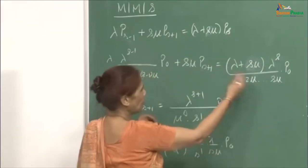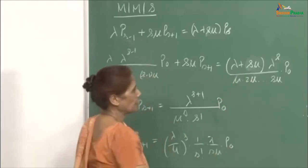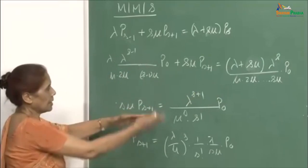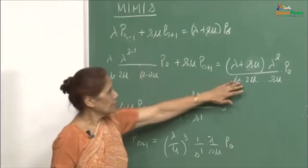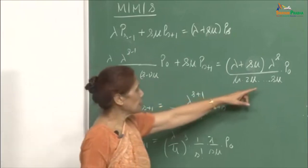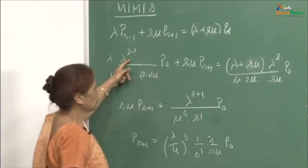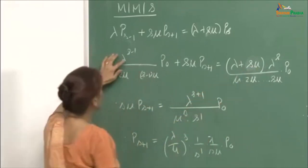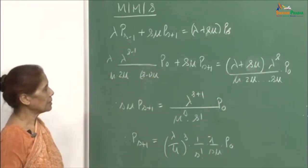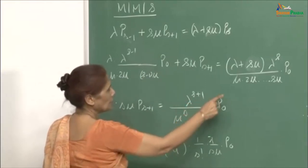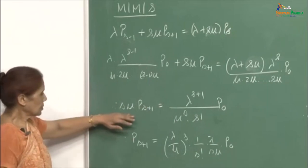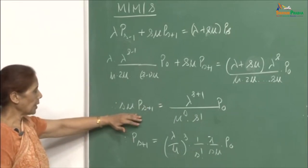Up to p_S the same solution and same formula apply: μ·2μ···S·μ. As we simplify, take this to the other side, and you can do this calculation yourself. You subtract this expression — you have S-1·μ here, so you get S·μ in the denominator when you multiply by S·μ. The λ·S·μ term cancels out, and you are left with λ^{S+1}. This gives you S·μ·p_{S+1} equal to λ^{S+1} upon μ^S · S!.